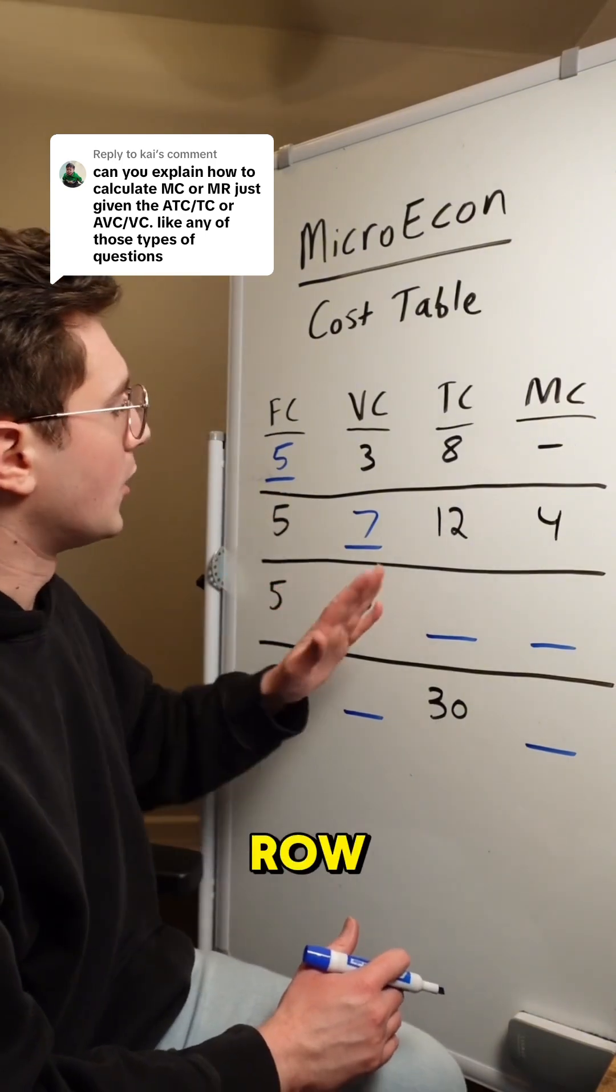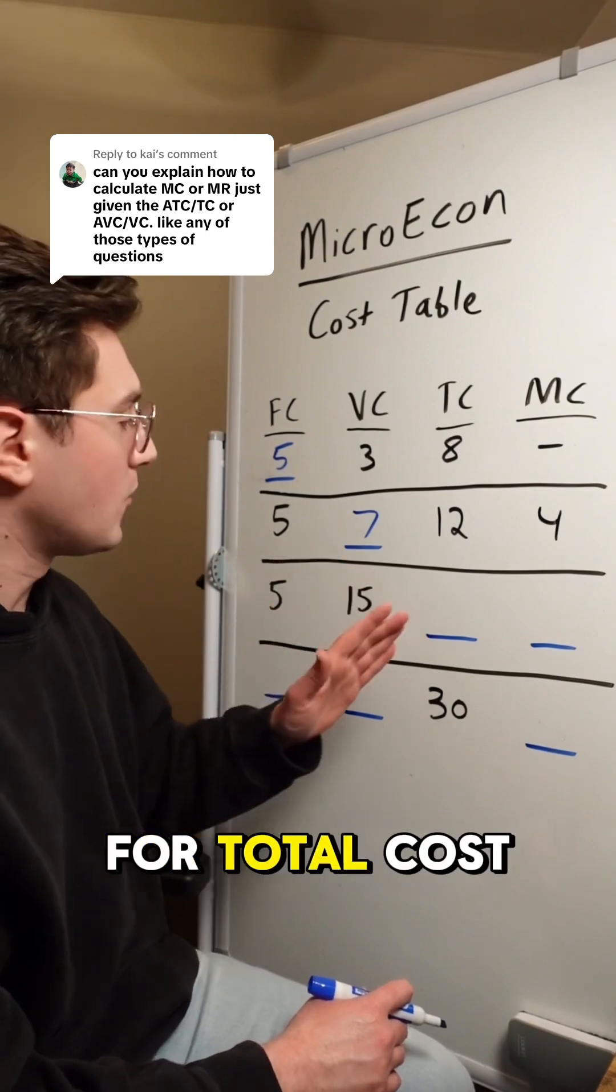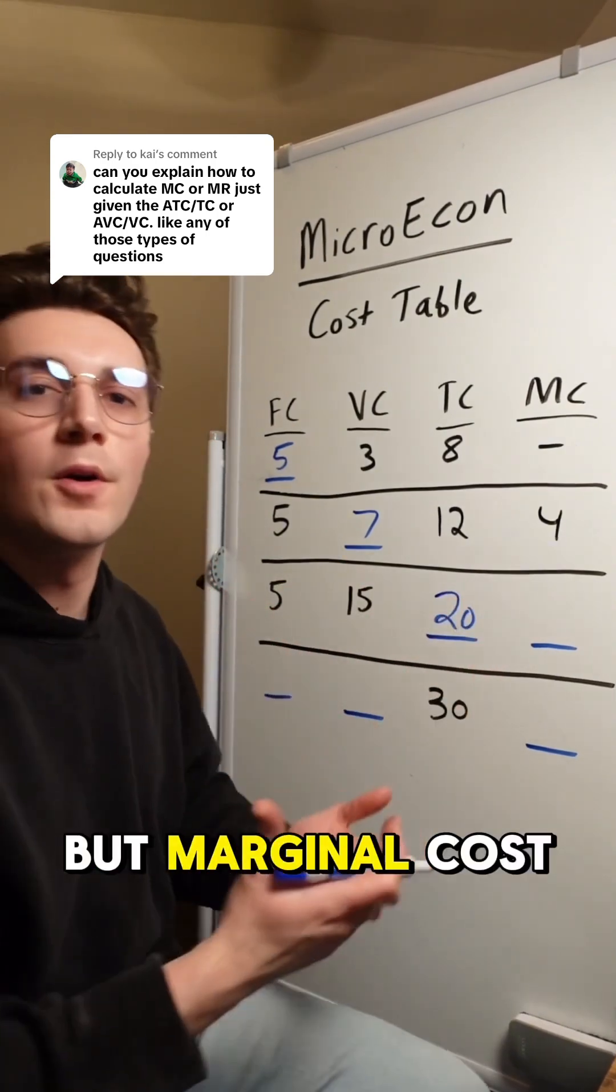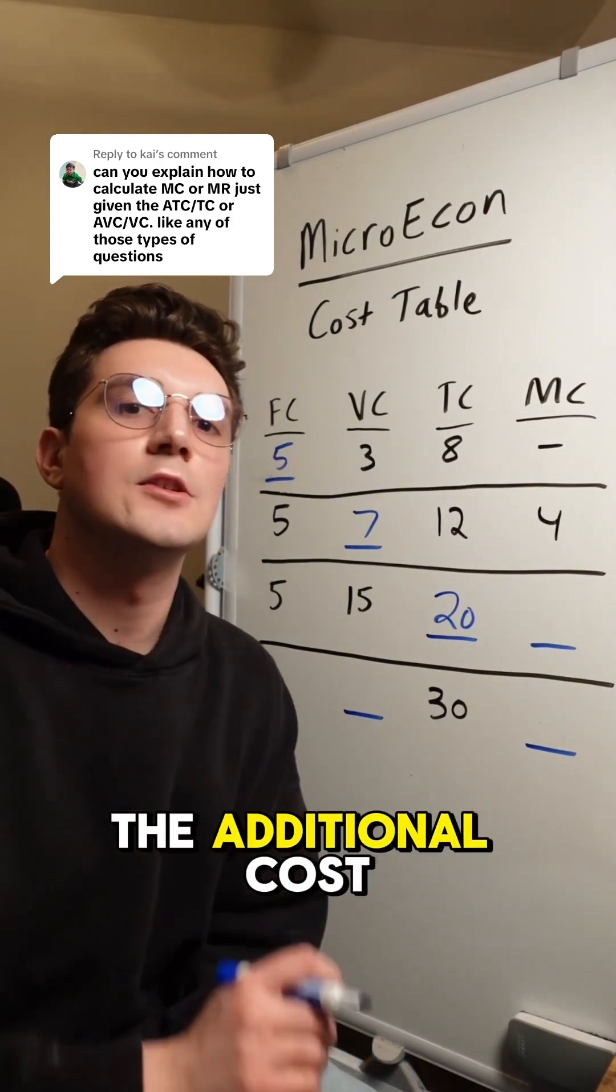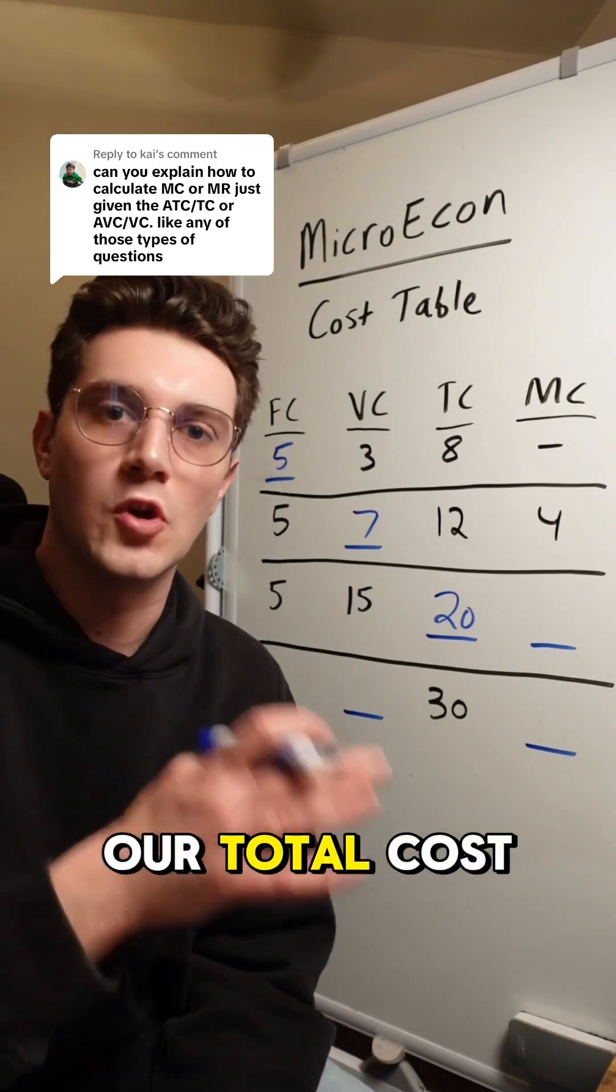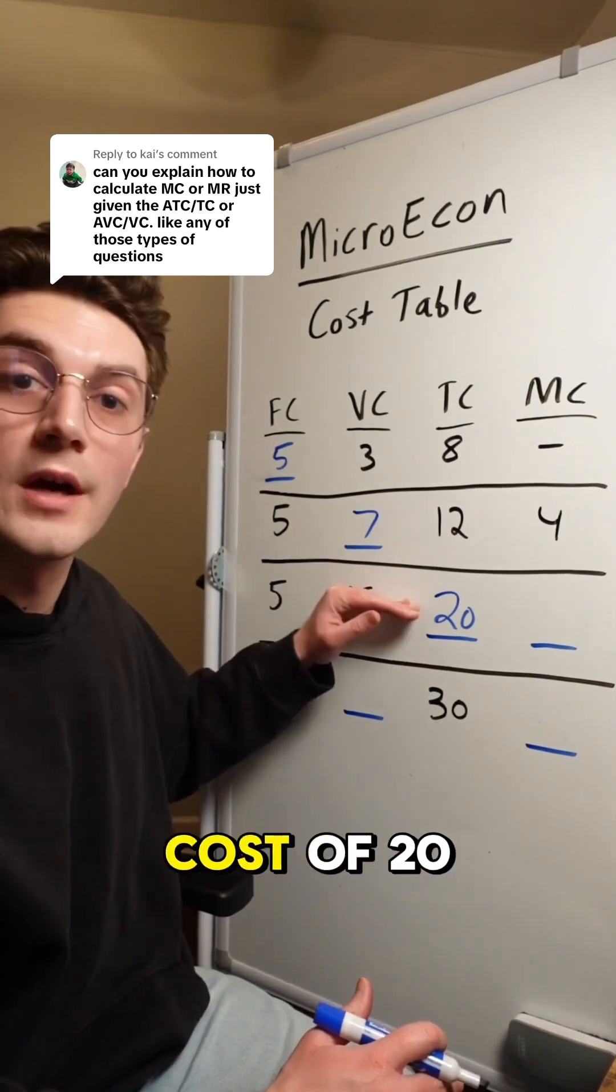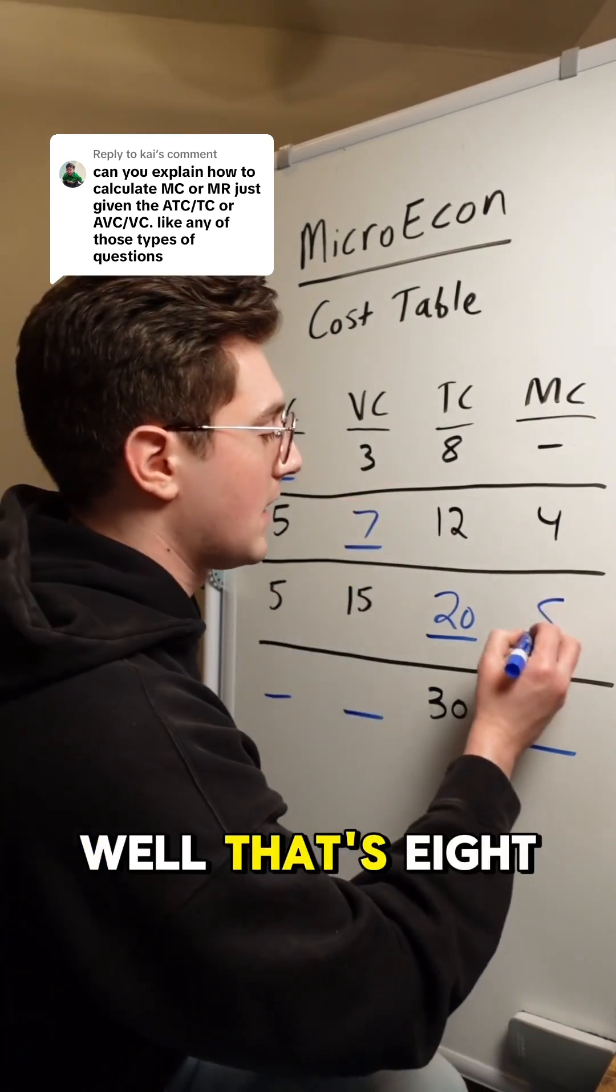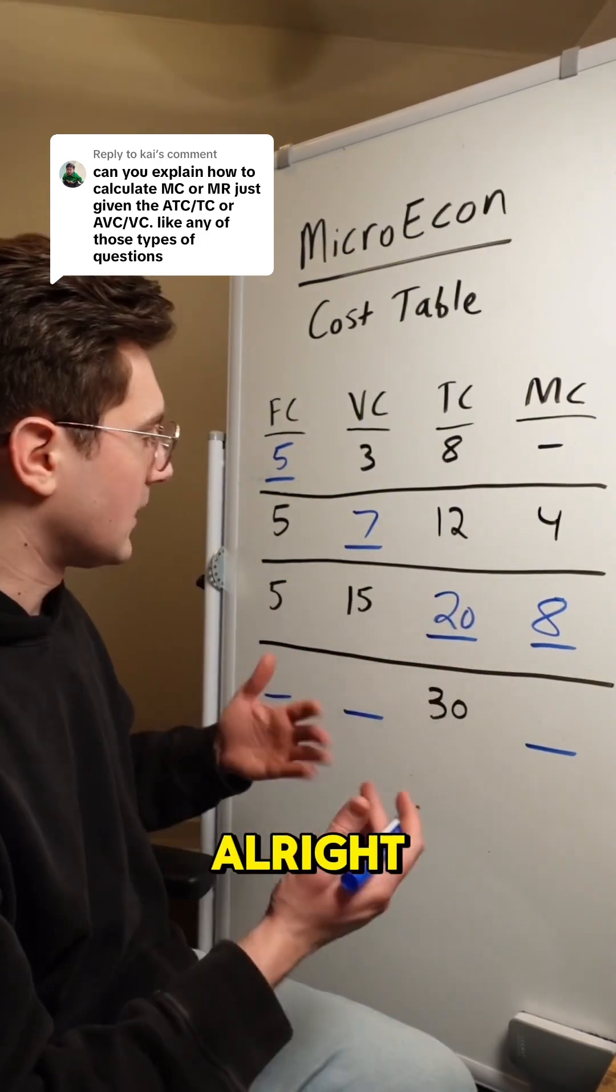All right, next up to your third row, we need to calculate total cost here and marginal cost. Well, for total cost, I'm just going to add together fixed and variable, so I'm going to get 20 right here. But marginal cost, how can we solve for that? Well, remember, marginal cost is the additional cost of the next unit. And to find that, we need to know how our total cost changed from the previous unit to the current unit. In other words, what's the difference between our total cost of 20 right here and our total cost of 12 at the previous unit? Well, that's eight. So our marginal cost of this third unit right here is eight bucks.